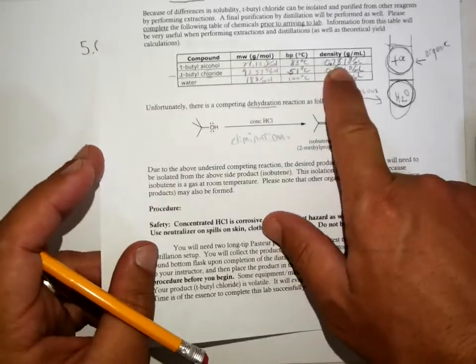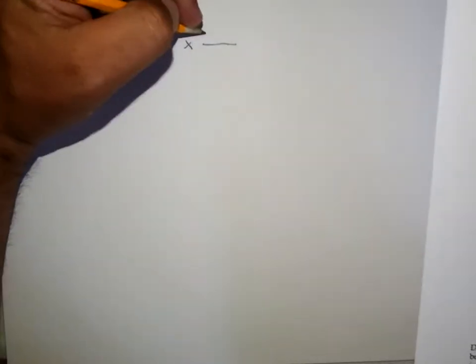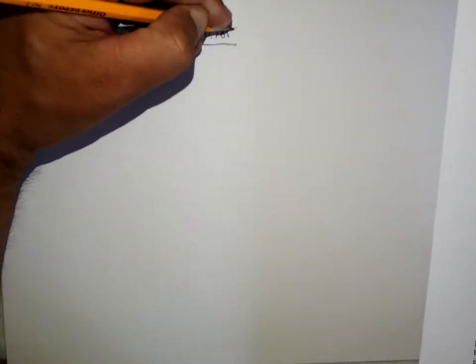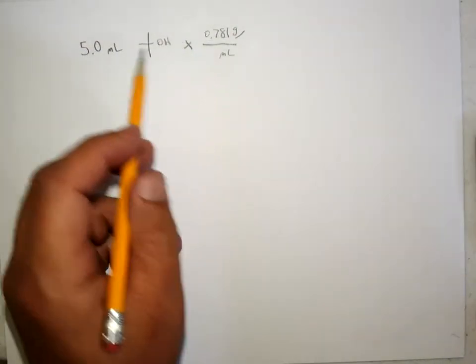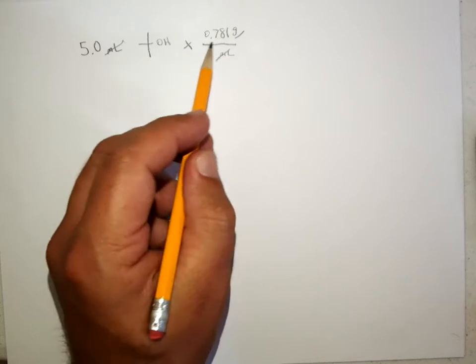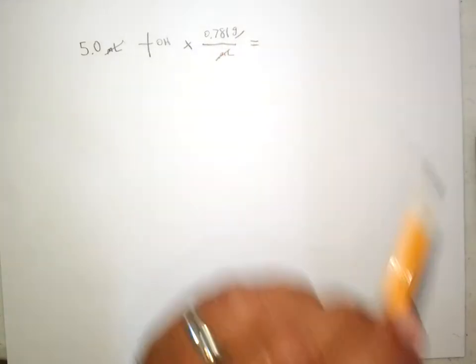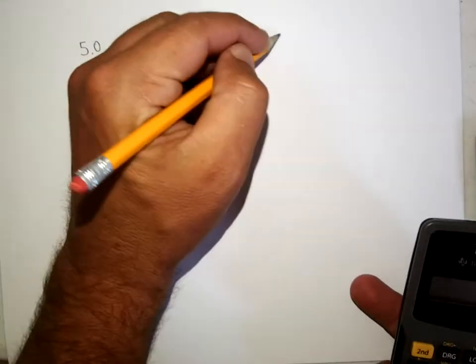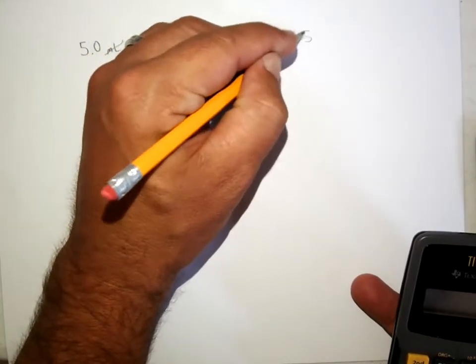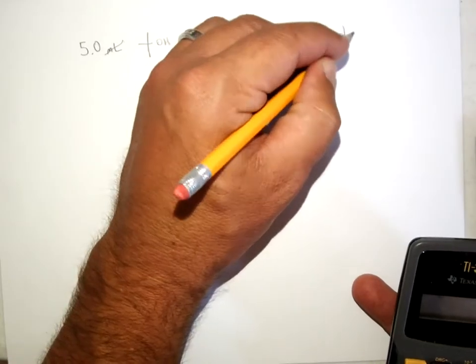This is where you want to have that data that I had shown before. Your density of your starting material is 0.781 grams per milliliter. So if you multiply the volume times the density, you're going to get the mass of the t-butyl alcohol. So let's do that. Five times 0.781 equals 3.905 grams of tert-butanol.